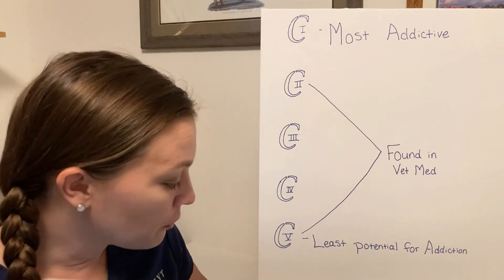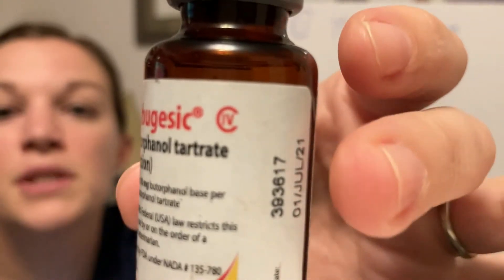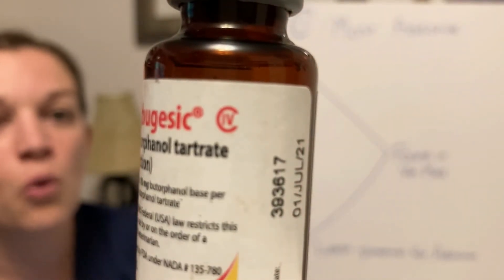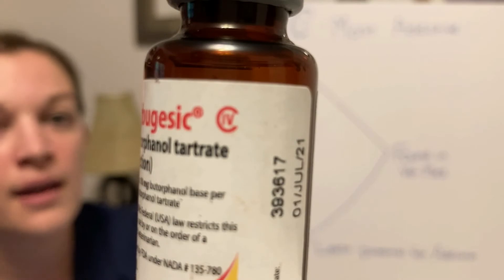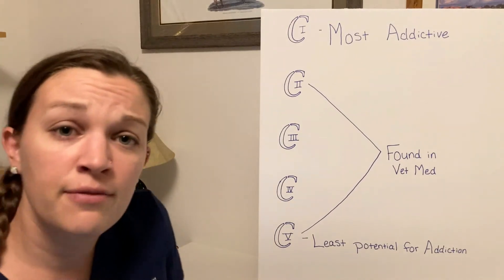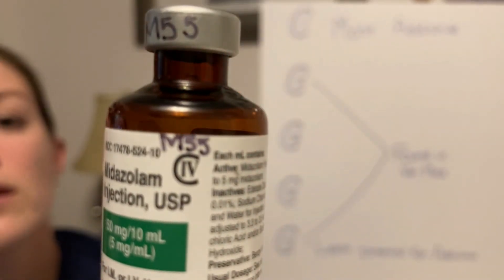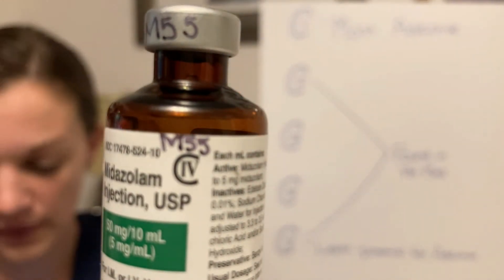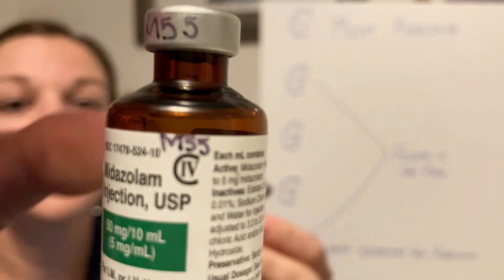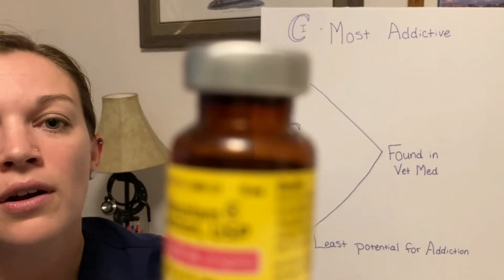I have some C4s for you. So I have some butorphanol — a butorphanol empty here. You'll see the C4 over on this side. And then I have a couple of different versions of midazolam just so you can see the difference. Here's one with a little tiny C4, and then this one is even tinier — it has a little C4 over on the side.